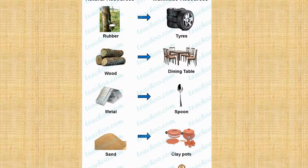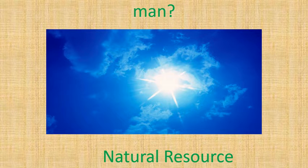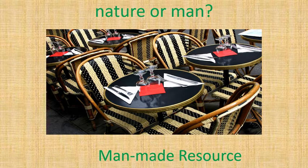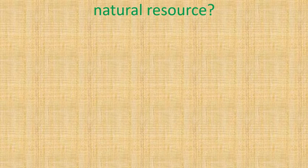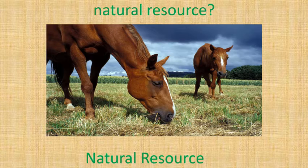Is this object made by nature or man? This is a natural resource — the sun. Are these objects man-made or made by nature? These are man-made resources. Is this an image of a man-made or natural resource? This is a natural resource.